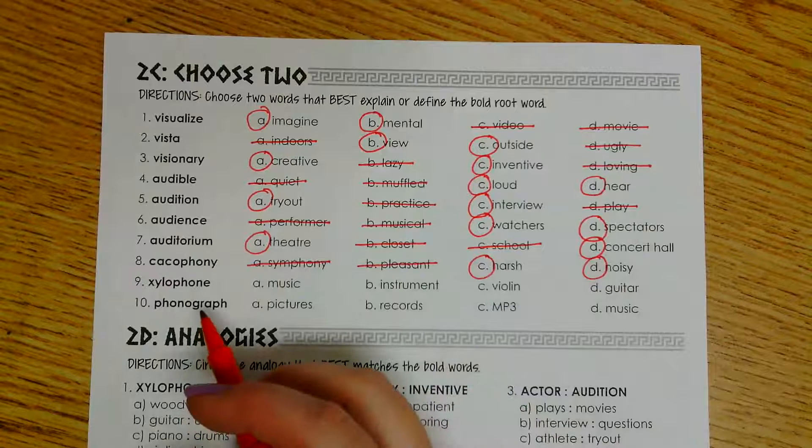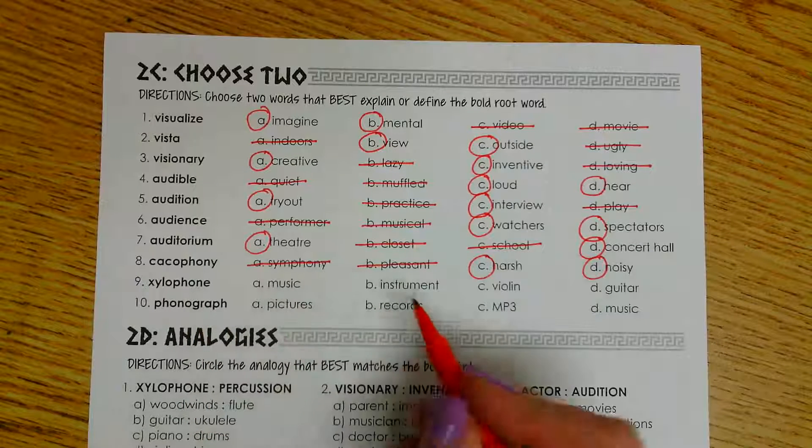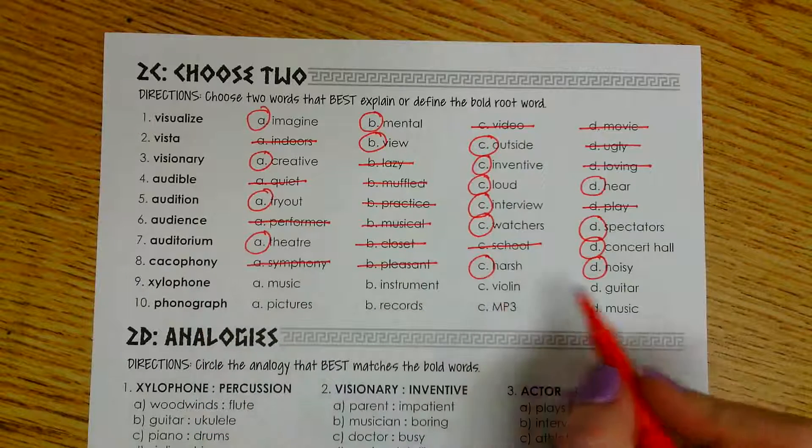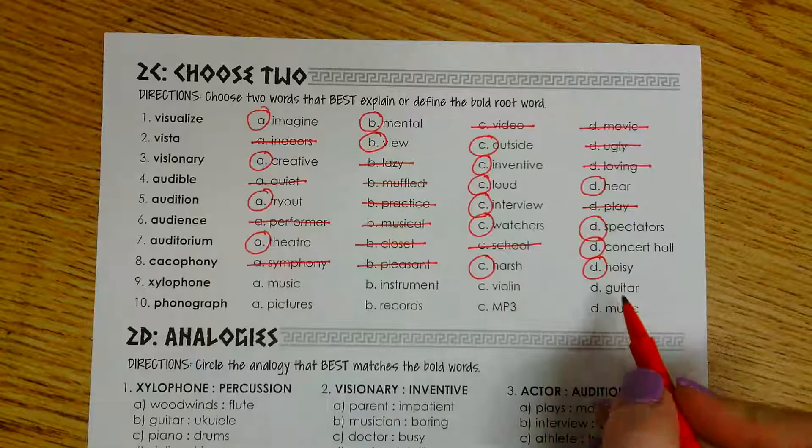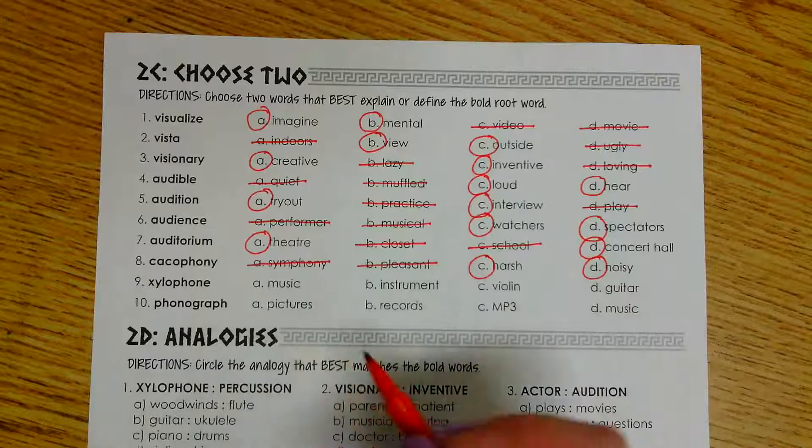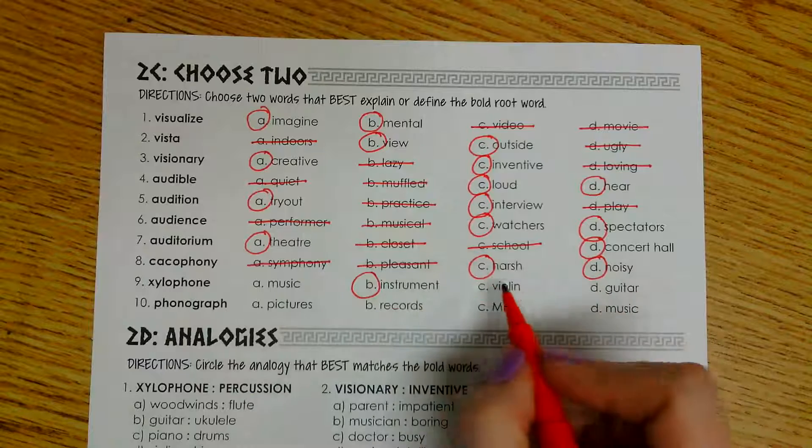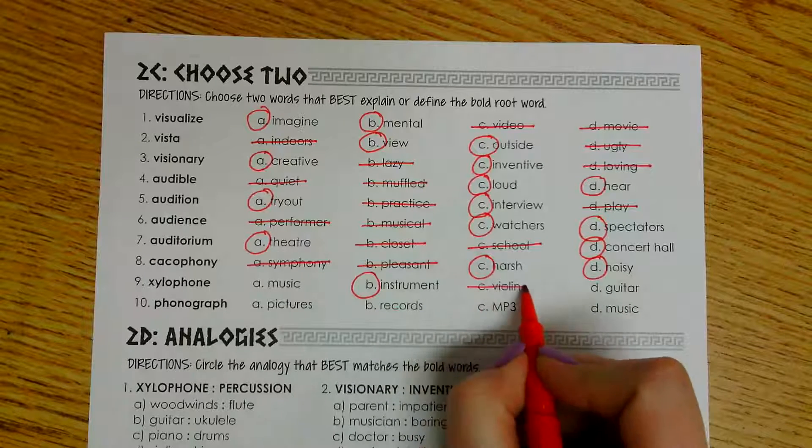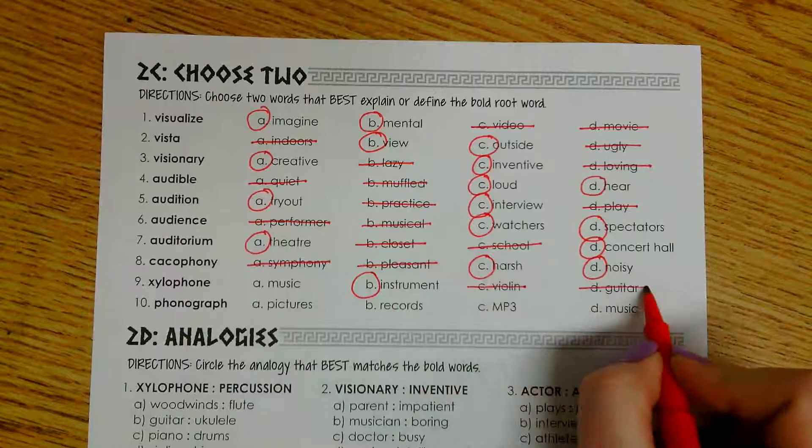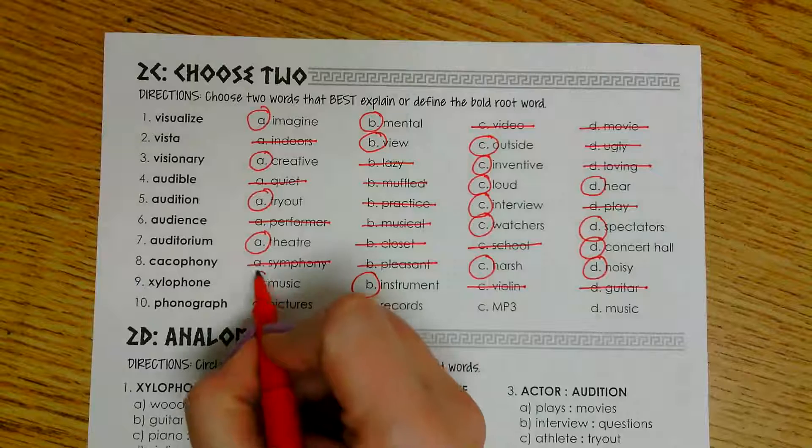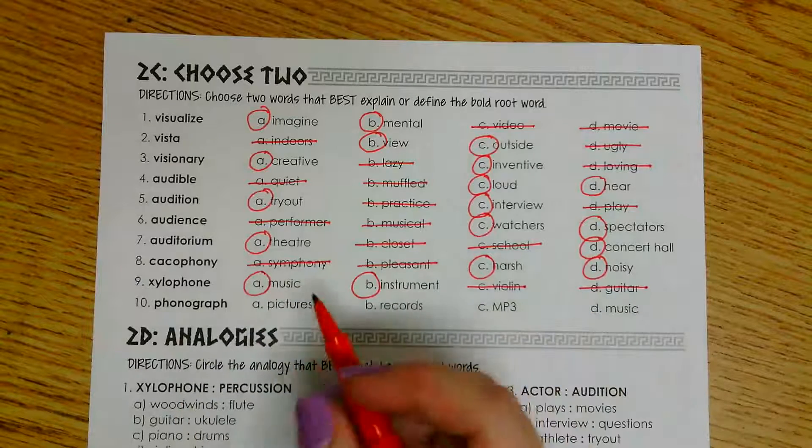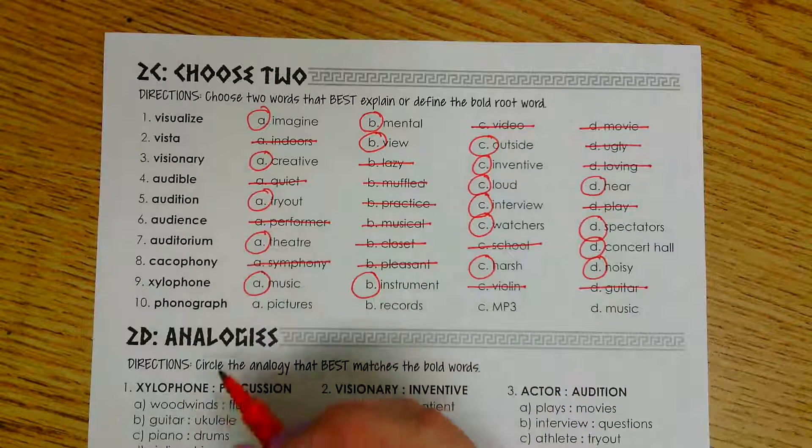Number nine is xylophone. We have music, instrument, violin, and guitar. Well, I know a xylophone is an instrument. However, it is not a violin and it is not a guitar. So that leaves us with music and instrument because it's going to be an instrument that makes music.